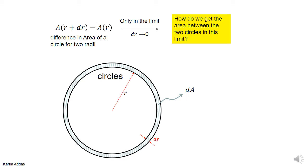We want to find the area between two circles with a very small difference in radius, and later the volume between two spheres with a very small difference in radius. Imagine a circle with radius r and another with radius r plus dr. How do you get the area dA between them? You take the area of the circle with radius r plus dr minus the area of the circle with radius r.